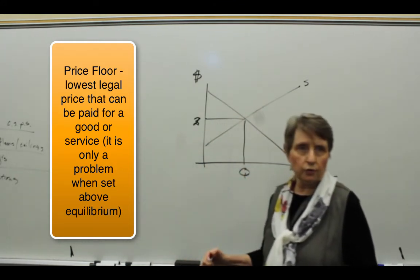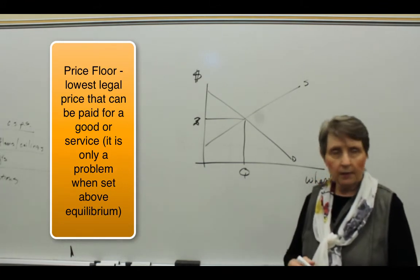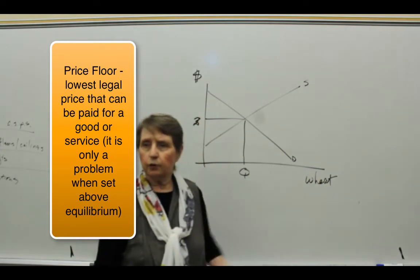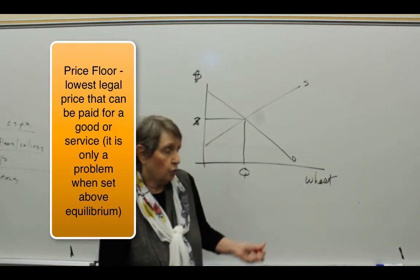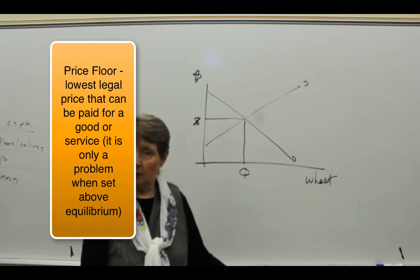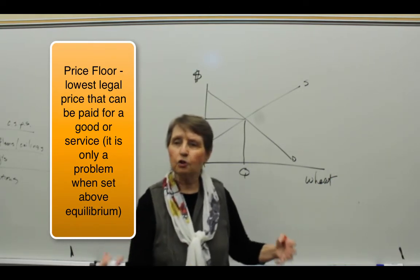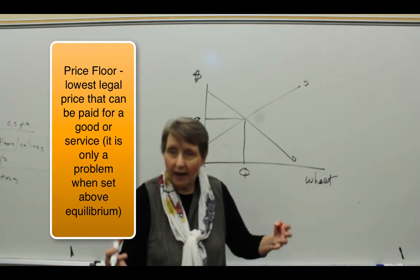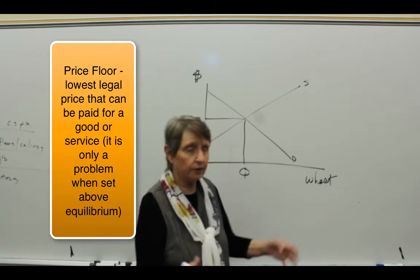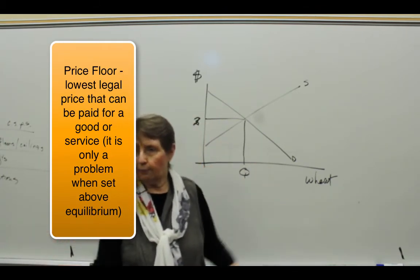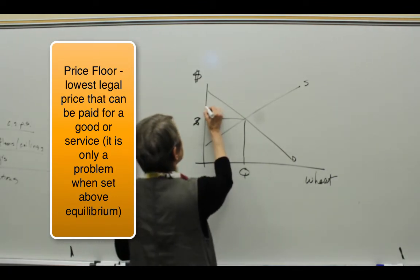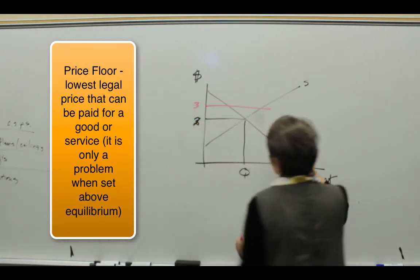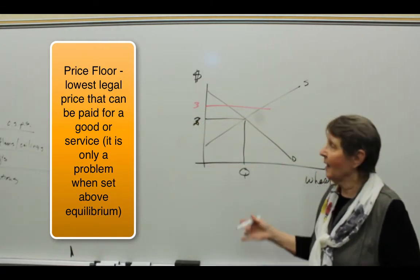One way they do it is to say, 'Well, wheat's not going to sell for two dollars a bushel. That's too low. Farmers can't make it.' And if you think about what's the most essential industry for any economy, it's agriculture. You don't need health care if you don't have food. Agriculture is the most essential industry. So the government says, 'In order to help farmers, because some farmers are struggling, we are going to say wheat has to sell for three dollars a bushel.'